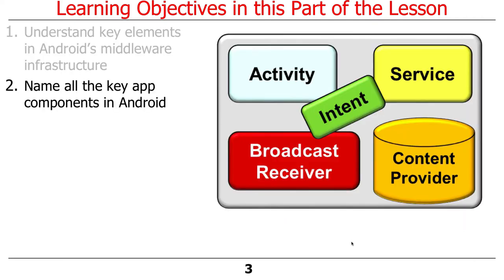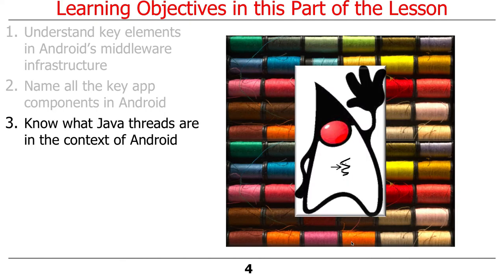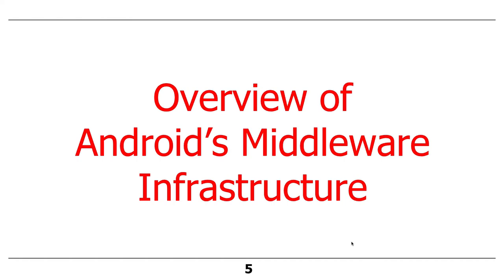We'll also talk about the key components in Android. Android has a lot of classes, but some are more important — these are called the app components or application components. There are four primary components plus one that glues them all together. And then I'll talk a little about Java threads, giving you the context in which they apply in Android.